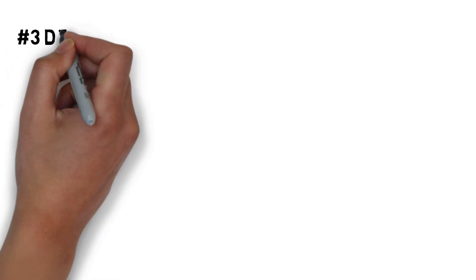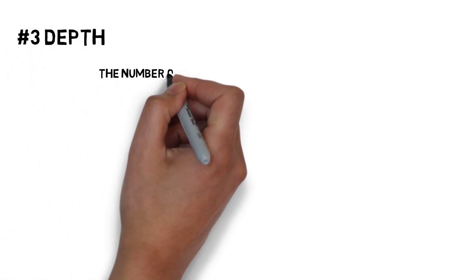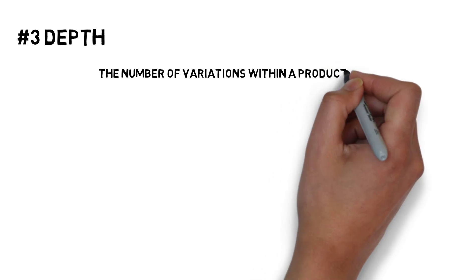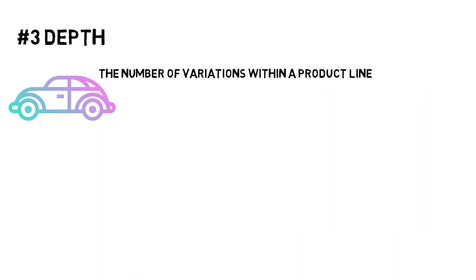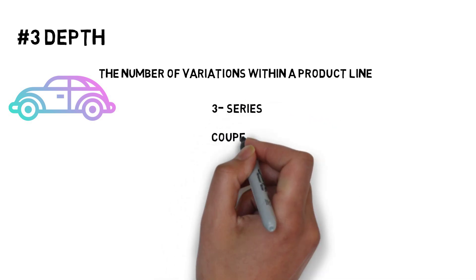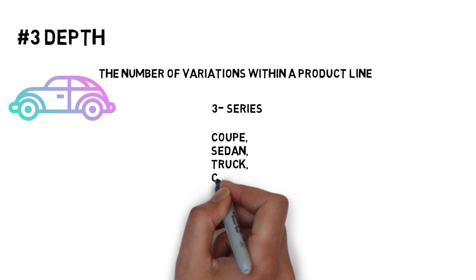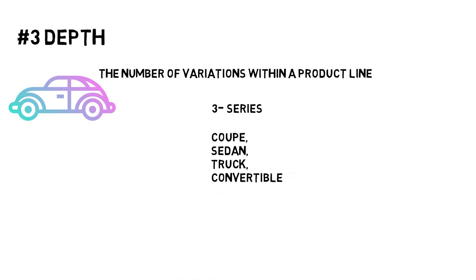In product mix, third one is depth. Depth refers to the number of variations within a product line. For example, continuing with the car company example above, a 3 series product line may offer various variations such as coupe, sedan, truck, and convertible. In such a case, the depth of the 3 series product line would be 4.